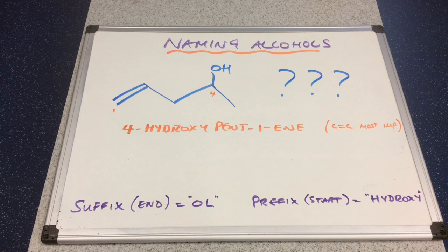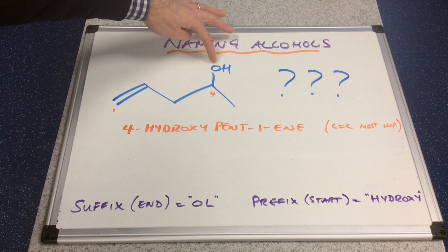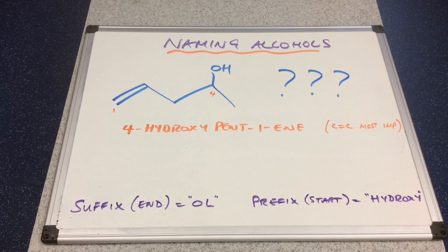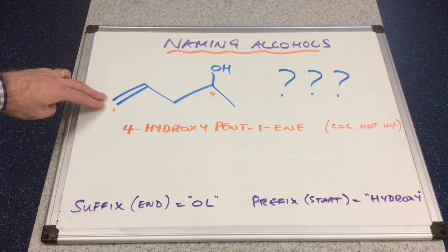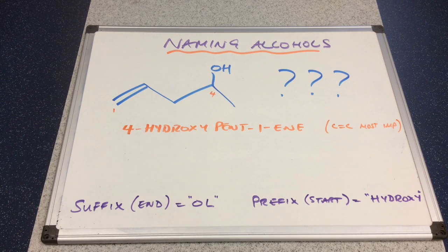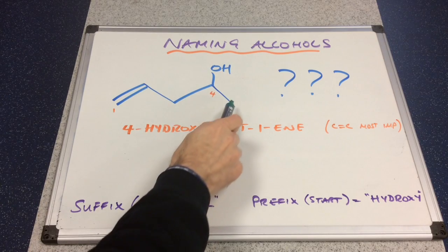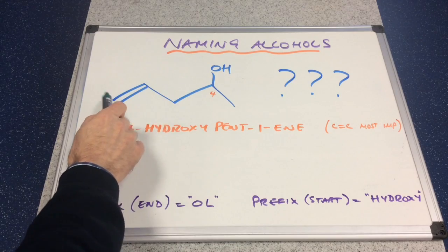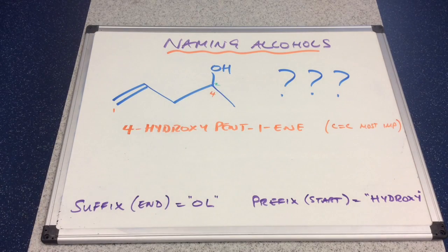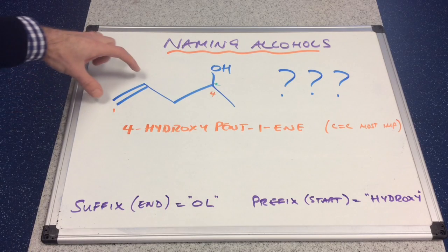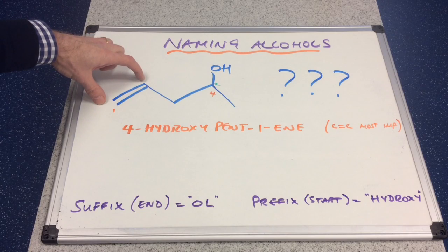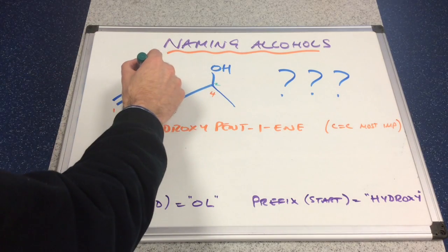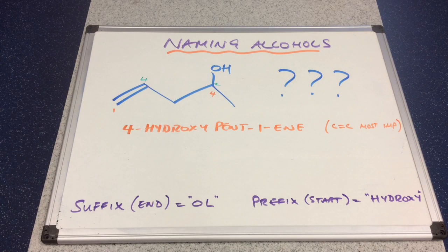Now let's flip it around and assume that the OH group is the most important, meaning this is an alcohol and the C=C double bond is less important. Counting along: one, two, three, four, five — carbon number two is where the OH group is, so it's pent-... choosing words carefully now... pent-en-2-ol. Remember it's an alkene as well, so where's the carbon-carbon double bond? If that's carbon number two, three, four — we'd call this pent-4-en-2-ol.